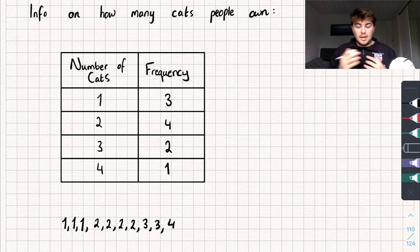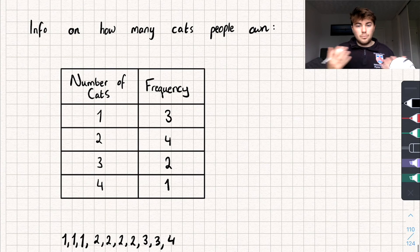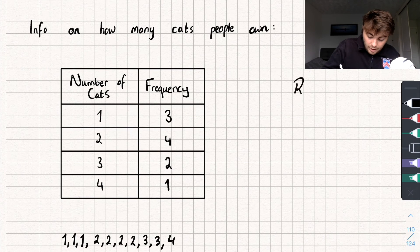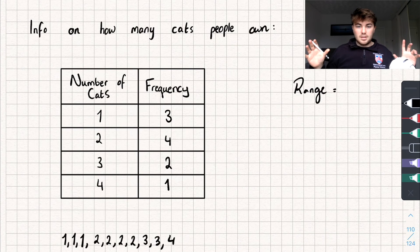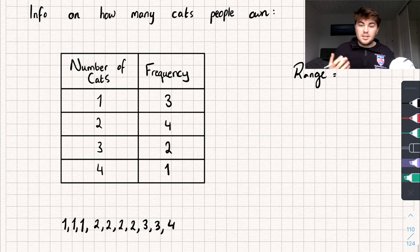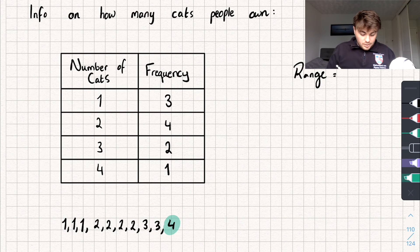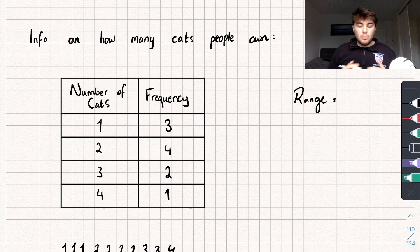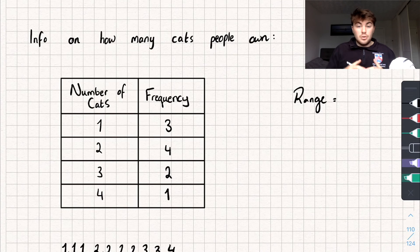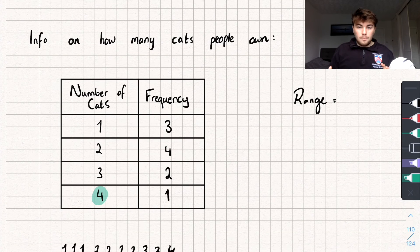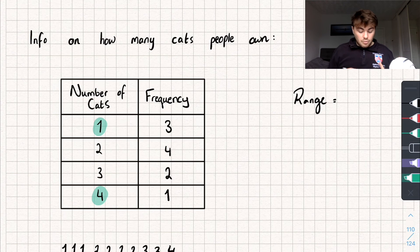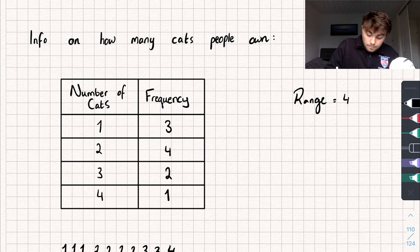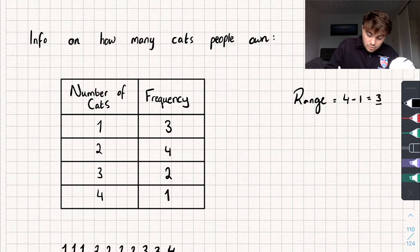So how can we use the table to calculate averages? Let's start with probably the easiest average which is the range. The range can be calculated by doing the largest data value subtract the smallest data value. Obviously from the list of data we can see it's just going to be 4 subtract 1. But looking at the table, what is the highest number of cats that we have? Well you can see that's 4. And what is the smallest? 1. So when we're looking at this we're really only interested in this column representing the number of cats. So we're going to do 4 subtract 1 which gives us 3 as our range.